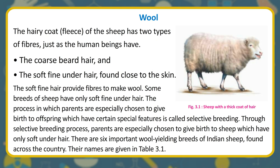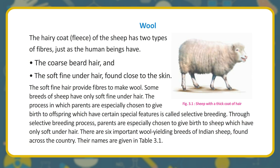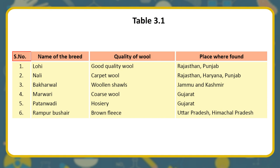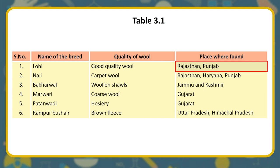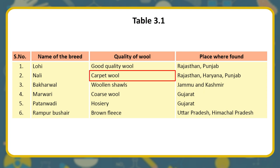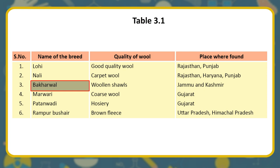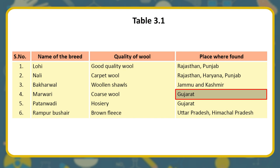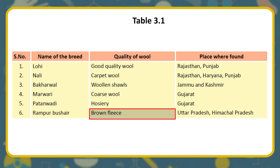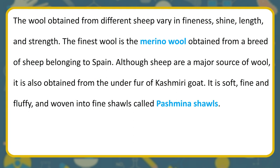There are six important wool-yielding breeds of Indian sheep found across the country, as listed in Table 3.1. These include: Lohi — good quality wool, found in Rajasthan and Punjab; Nali — carpet wool, found in Rajasthan, Haryana, and Punjab; Bakharwal — woolen shawls, found in Jammu and Kashmir; Marwadi — coarse wool; Patanwadi — hosiery wool; and Rampur Bushar — brown fleece, found in Uttar Pradesh and Himachal Pradesh. The wool obtained from different sheep varies in fineness, shine, length, and strength.